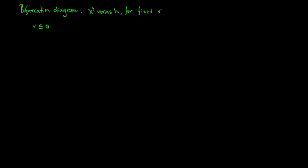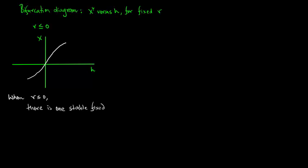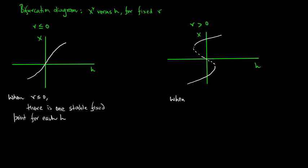We consider the bifurcation diagram for x star versus h for fixed r. First consider the case where r is less than or equal to 0 and we plot x versus h. When r is less than or equal to 0, there is one stable fixed point for each h. Now we consider the case r greater than or equal to 0 which proves to be more exciting.